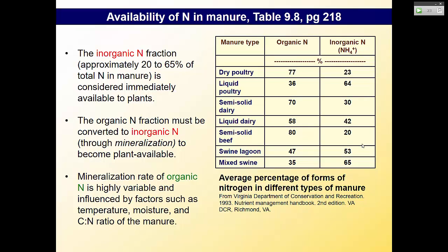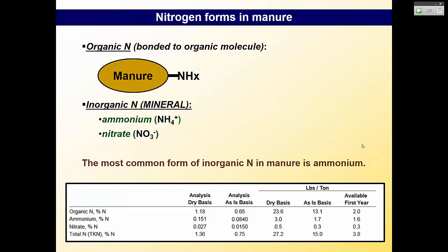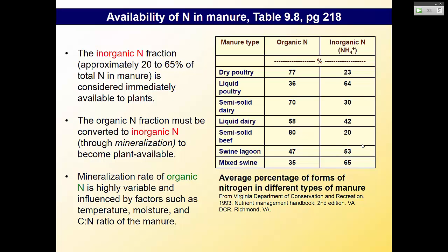The inorganic fraction can range from 20 to 65% of total nitrogen. Nitrate and ammonium are immediately available to plants — if manure with those forms is applied, plants can take them up right away. The organic fraction must be converted to inorganic nitrogen through mineralization. Mineralization is highly variable and influenced by temperature, moisture, and C:N ratio of the manure.